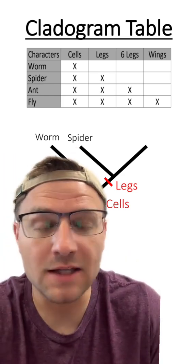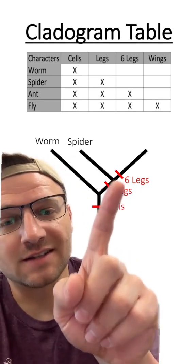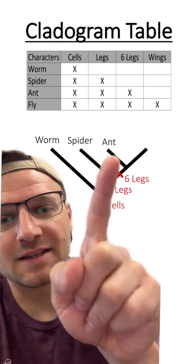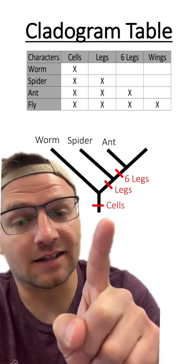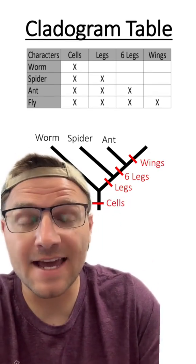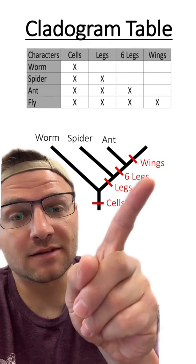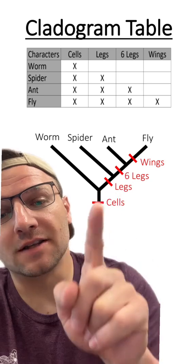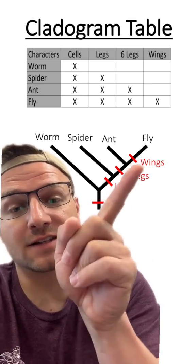Then again, I repeat to figure out what the next adaptation is, which is the six legs adaptation. I place the ant here because it has six legs, legs, and cells. And then I find the last adaptation to evolve, which is wings. And I lastly put the fly at the top here since it has cells, legs, six legs, and wings.